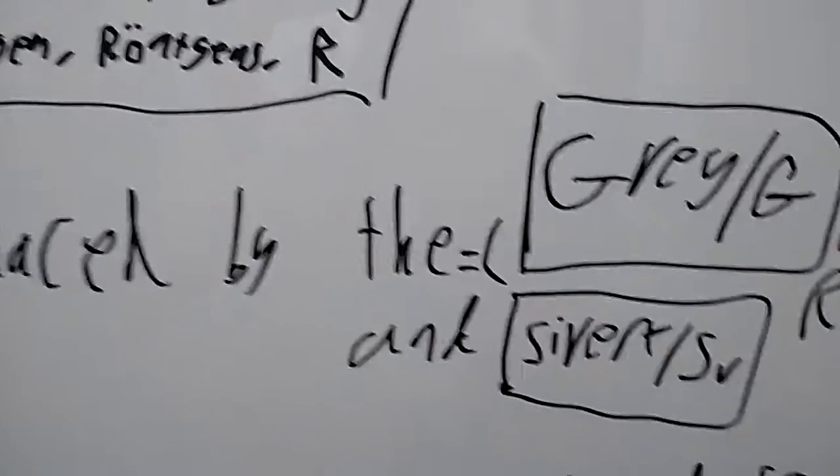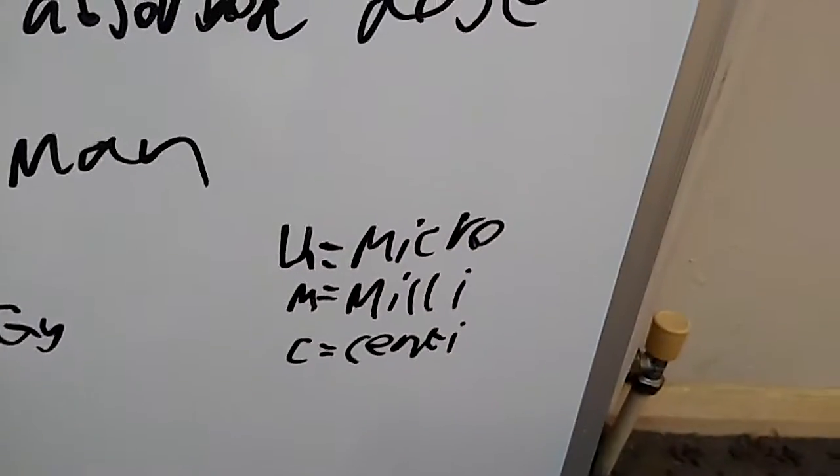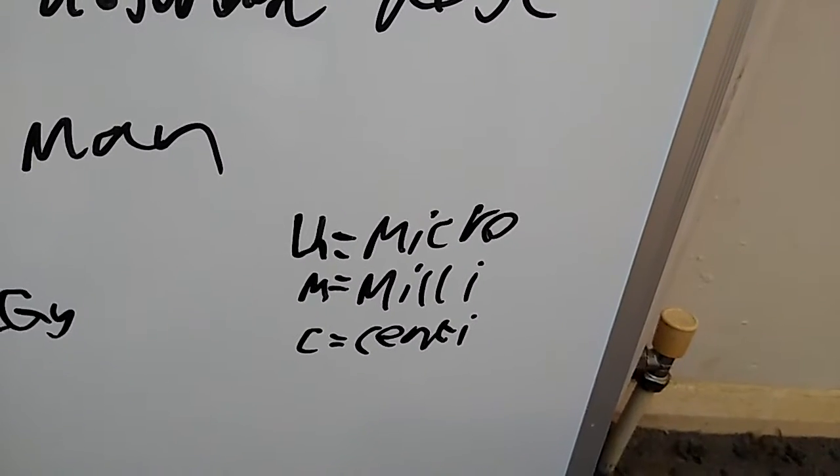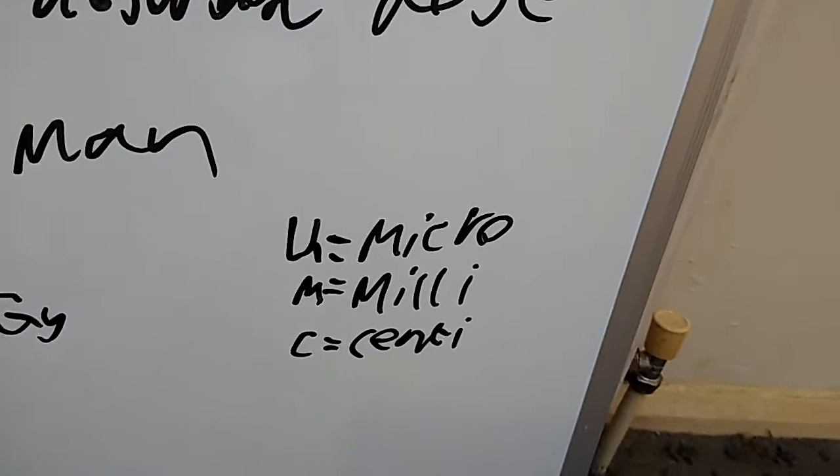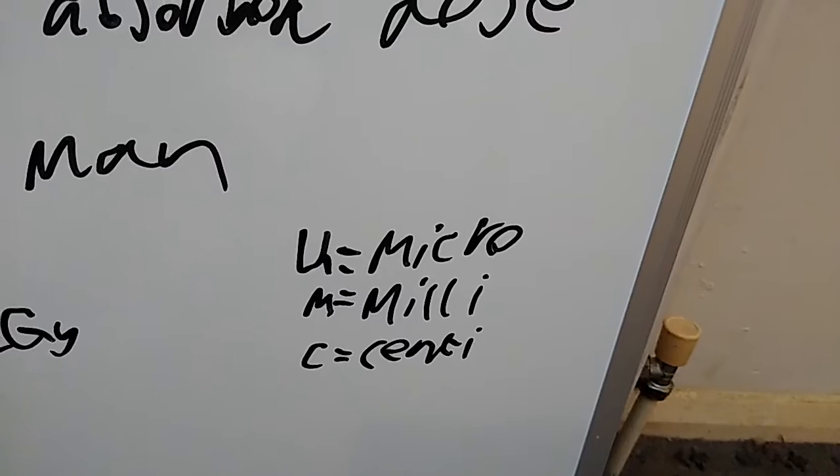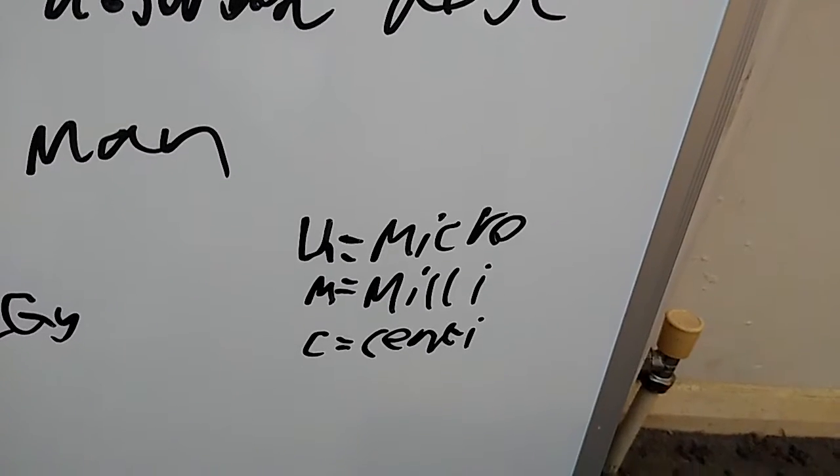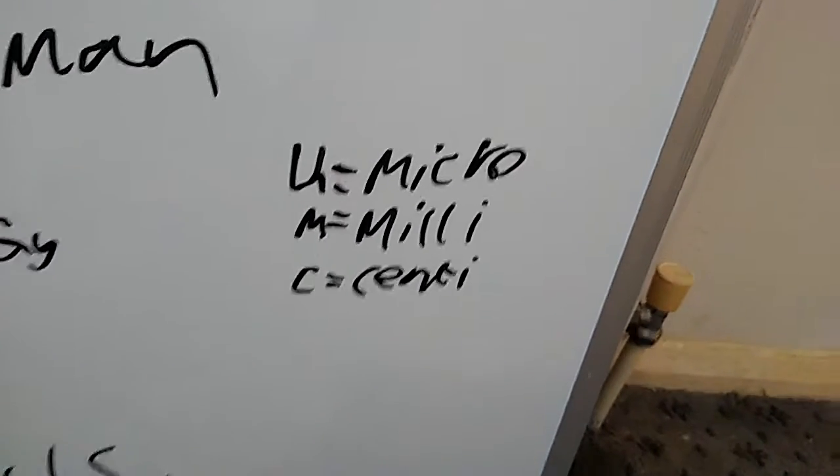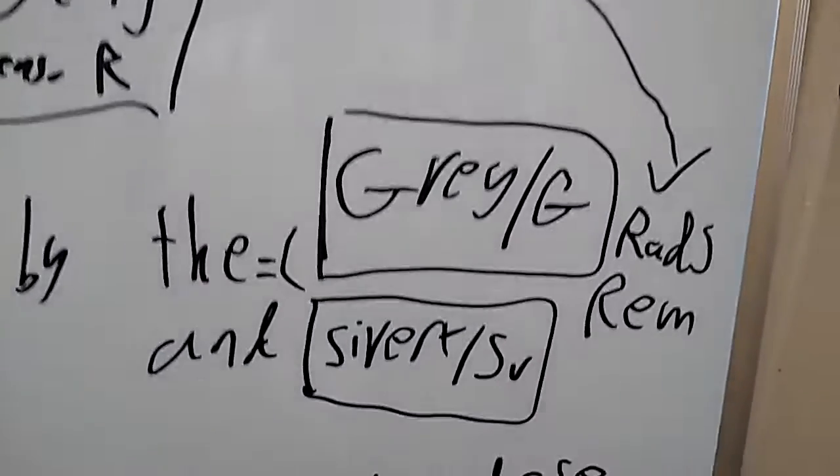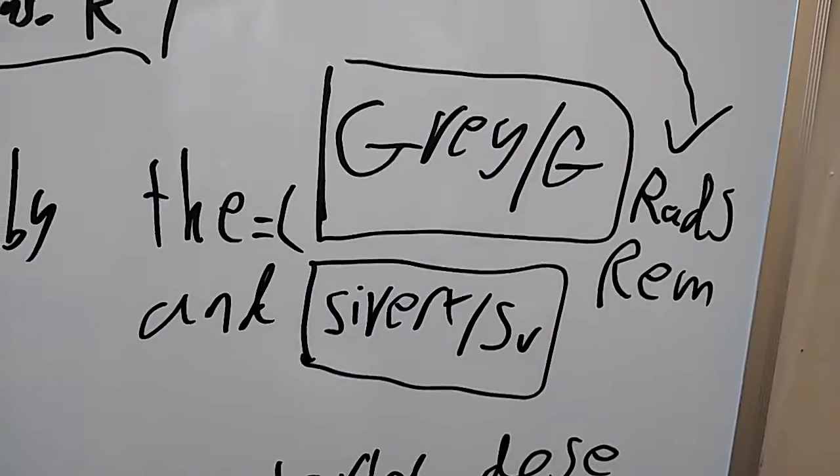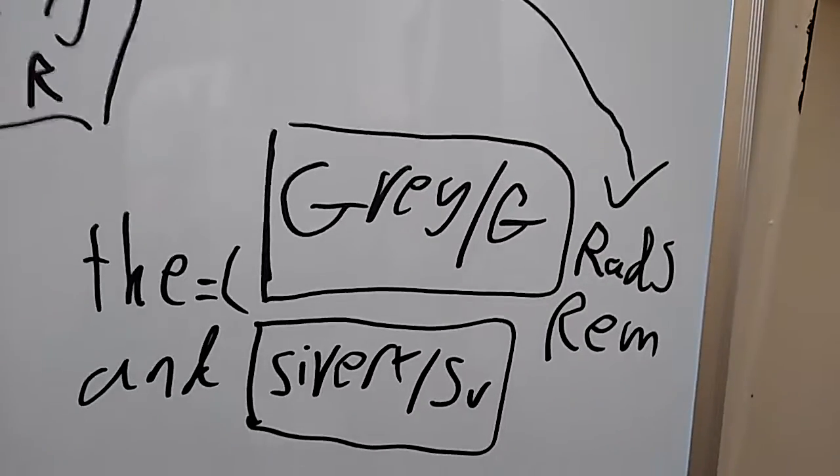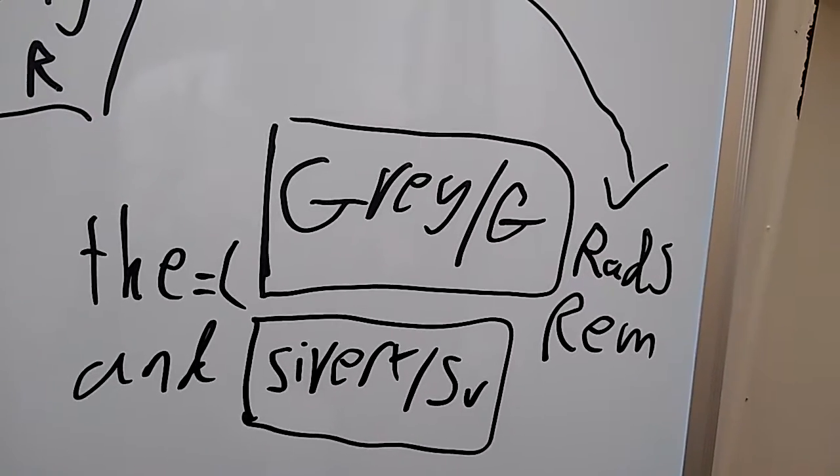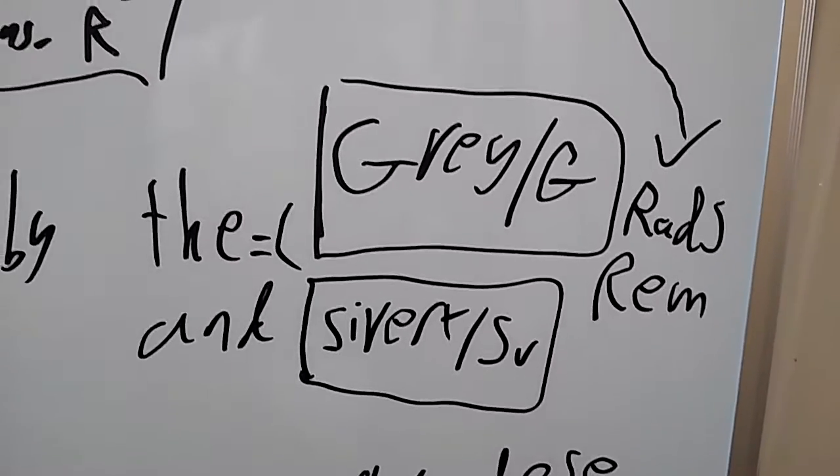So what I've done here is given you a little thing that says, so the funny U means micro, M means milli, C means centi. So as in micro Sievert, milli Sievert, centi Sievert. And if you just had the unit on its own, then it would be a Röntgen, a Gray, or a Sievert. You very rarely see milli RADs and milli REMs, but I don't think I've ever seen like centi Rad, centi REMs or anything like that.